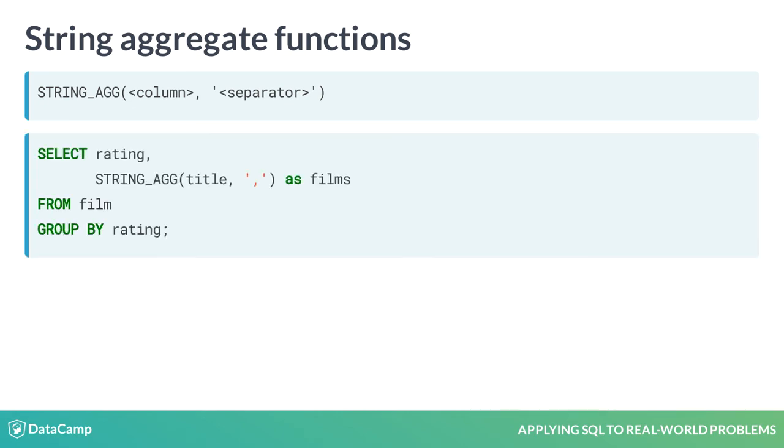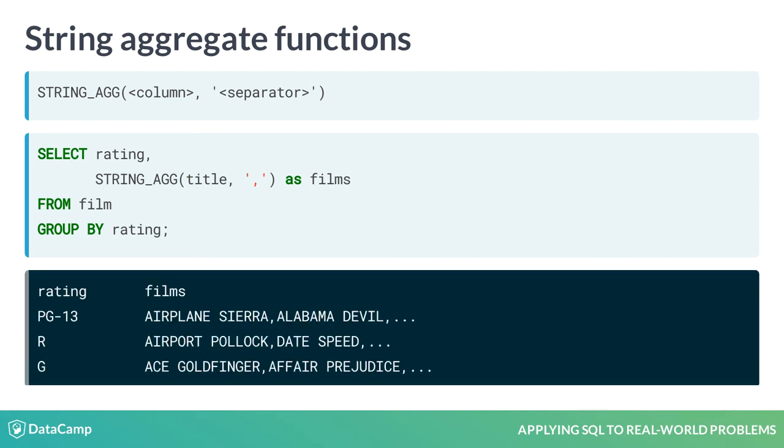In this example, the STRING_AGG function is used to combine the film titles for each rating using the comma as a separator. The result of this query is a list of comma separated film titles for each rating category.